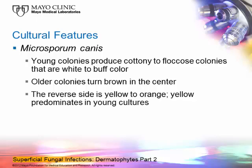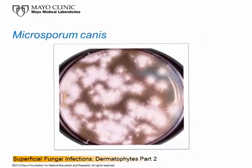The next slide shows the information relating to cultural morphology. Young colonies produce a cottony to flaky appearance and are white to buff in color. As cultures get older, they turn brown in the center, and then the reverse side turns orange. You can see the yellow going through the front of the culture while the back is orange. An early culture of Microsporum canis has a feathery appearance at the periphery, which is pretty obvious on this example.